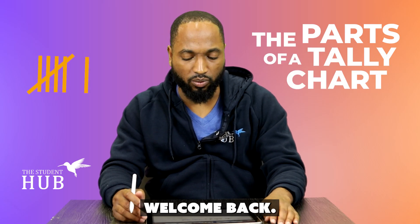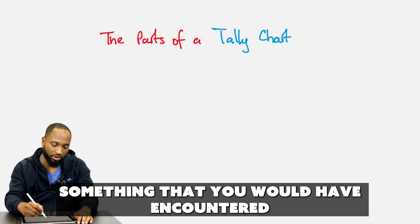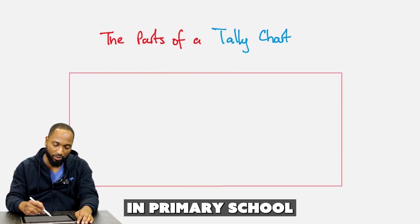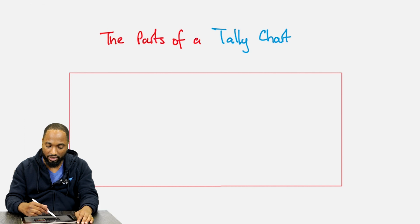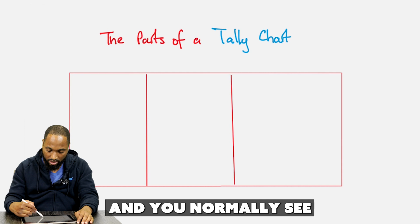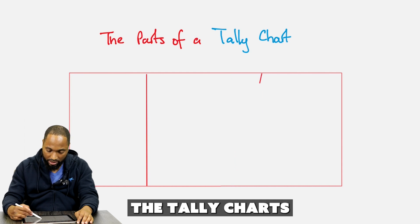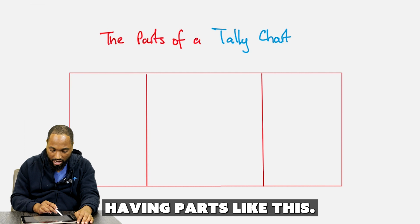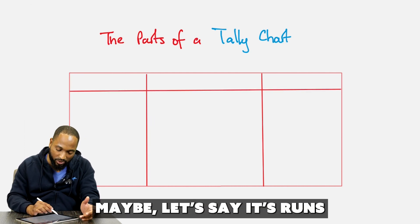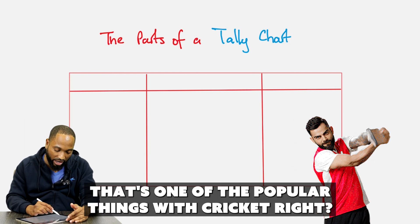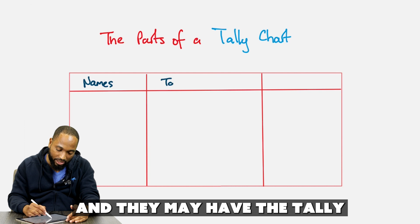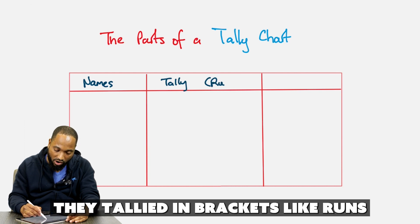The parts of a tally chart. Welcome back. A tally chart is something you would have encountered in primary school, at a lower level of mathematics. Tally charts normally have parts like this. Let's say it's runs — that's one of the popular things with cricket. So they may have the names here and the tally, with whatever they're tallying in brackets, like runs.